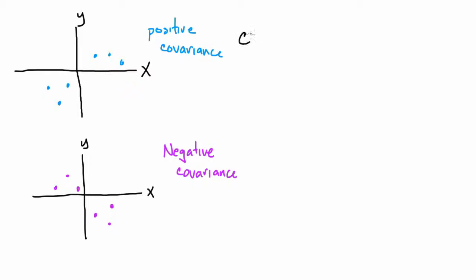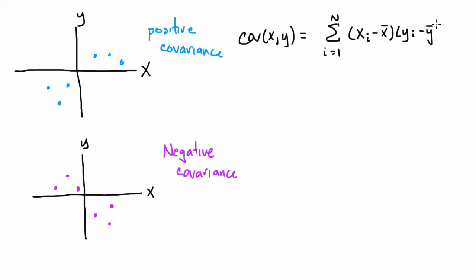Mathematically, the way we calculate covariance between two variables follows this formula. N is the total number of data points you have, and i is a placeholder for each individual data point in your graph. X-bar is the average of all the X's and Y-bar is the average of the Y variable. That's mathematically the formula to calculate covariance: for a positive covariance, when X is above its average — when X minus the average is positive — Y is more likely to be above its average.